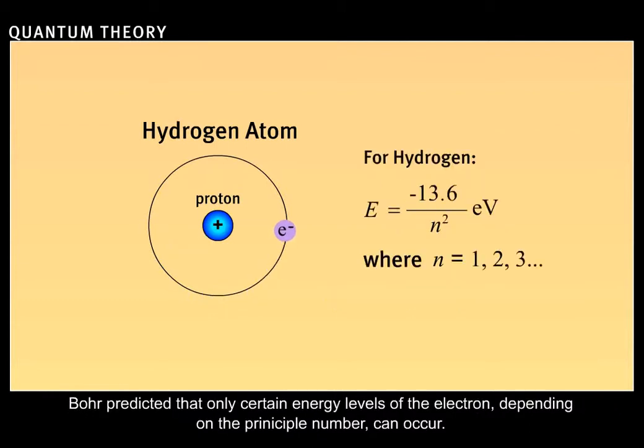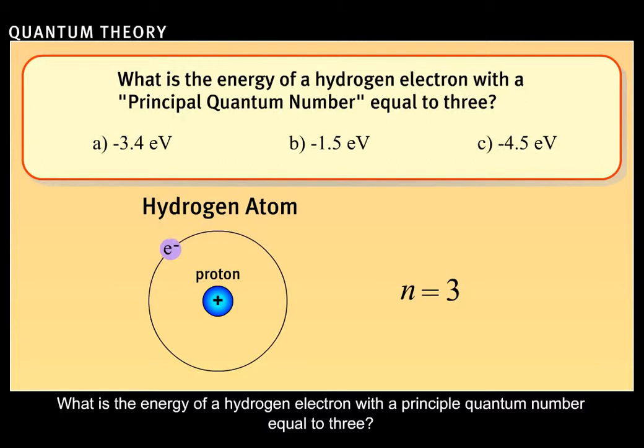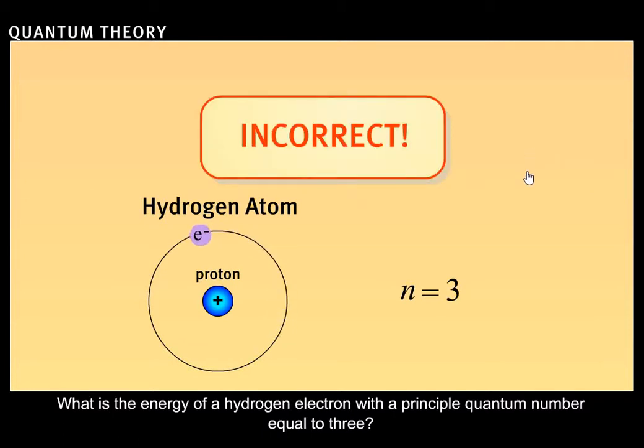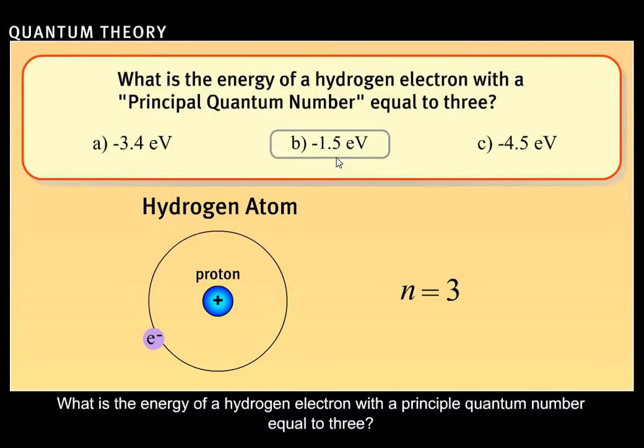Bohr predicted that only certain energy levels of the electron, depending on the principal quantum number, can occur. What is the energy of a hydrogen electron with a principal quantum number equal to 3? Correct.